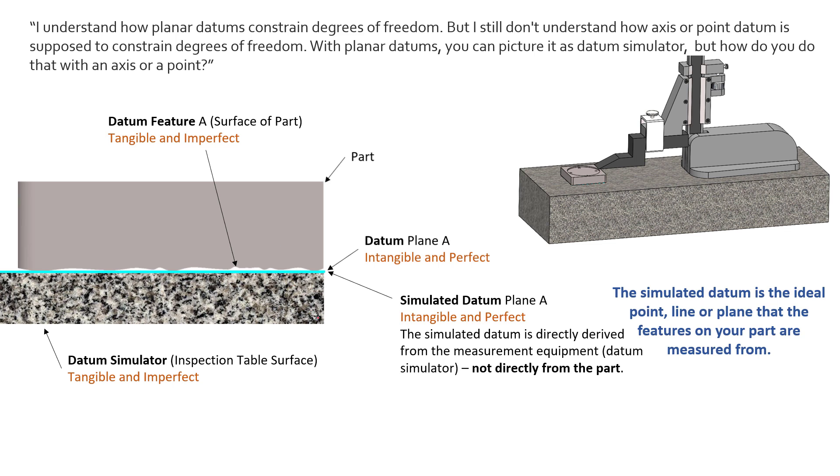In this scenario, this datum acting as a plane here restricts one translation up and down, a rotation about this way, and a rotation about in and out of the page. We have to picture the bottom surface of this part almost magnetically connecting to this surface, and it can't disengage from that surface. Once we've engaged into a datum, we cannot disengage it. So this datum as a plane controls three degrees of freedom: one translation, two rotations.